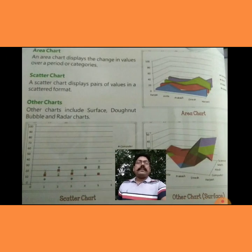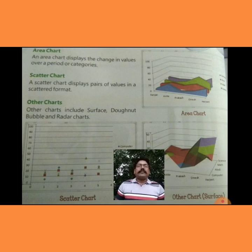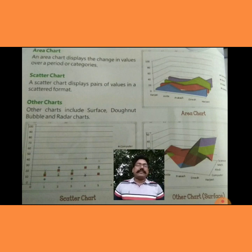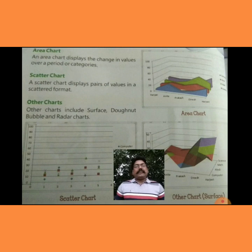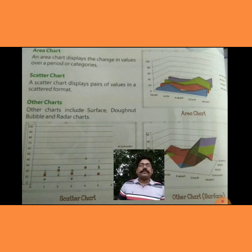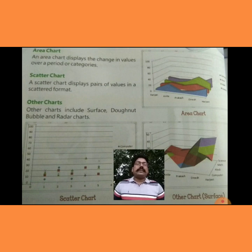Area Chart. An area chart displays the change in values over a period or categories. इस chart के मदद से हम लोग landforms को दिखाते हैं — कि plateau area कैसा दिखता है, mountainous area कैसा दिखता है, plains कैसा दिखता है। Scatter Chart. Scatter chart displays pairs of values in a scattered form. इसमें pairs of values को scattered form में दिखाते हैं, यानी signs और symbols की तरह।